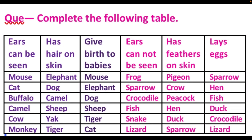Let's quickly revise. Complete the following table. Animals whose ears can be seen: mouse, cat, buffalo, camel, cow, and monkey. Animals which have hair on skin: elephant, dog, camel, sheep, yak, tiger. Animals which give birth to babies: mouse, elephant, dog, sheep, tiger, cat. The animals whose ears can be seen and which have hair on skin — they give birth to babies. These columns are deliberately in a different color to highlight the connection.